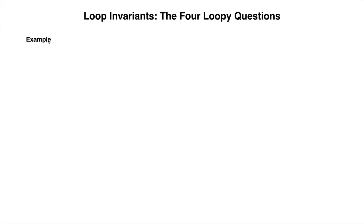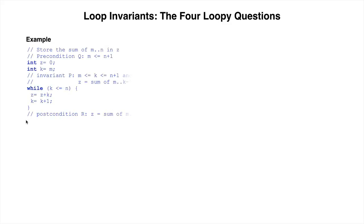We will now introduce the four loopy questions by looking at the following algorithm. This algorithm stores the sum of m..n in variable z. Execute it by hand with m equals 5 and n equals 7. You will see that it stores 18 in z. But looking at one test case is not a convincing argument that the algorithm is correct.